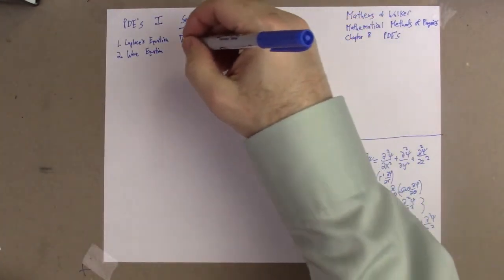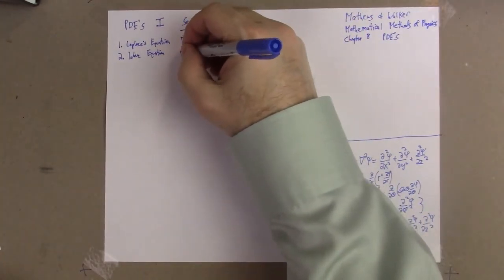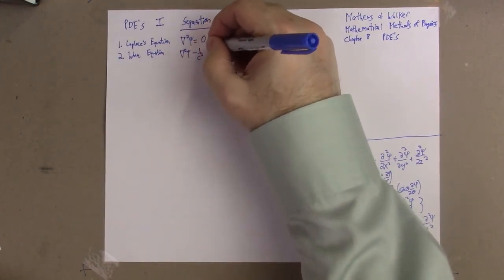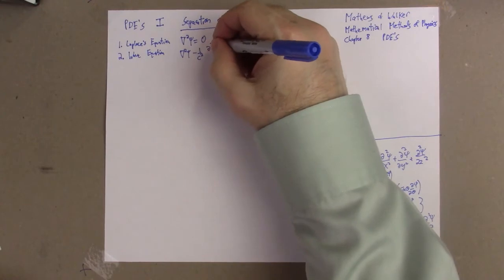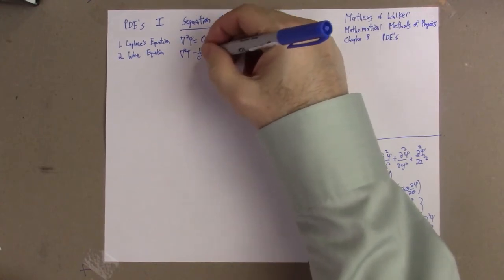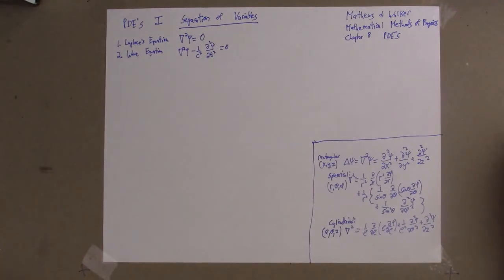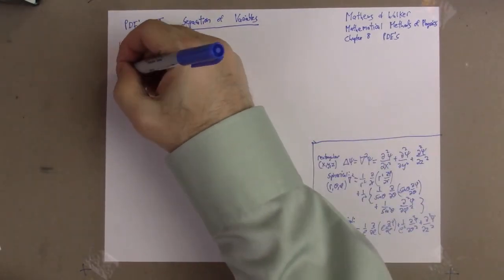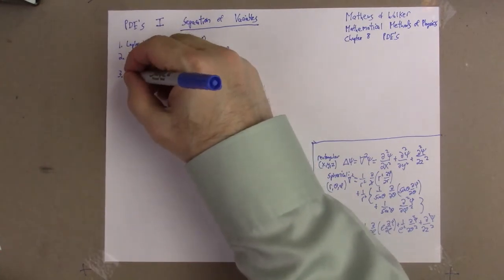The second type of equation that we want to look at is the wave equation. This is going to be del squared psi minus 1 over c squared times the second partial of psi with respect to time. c here is the constant—it's the velocity of light in the case of electromagnetism; in the case of other waves, it's just the velocity of the waves.